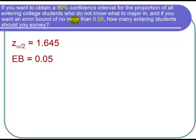Notice that we don't have a preliminary estimate for the proportion, so we use the formula for finding the sample size, or n, when we don't have a preliminary estimate for a proportion. And that's 1 fourth times z sub alpha over 2 over the error bound quantity squared.